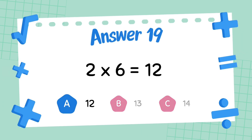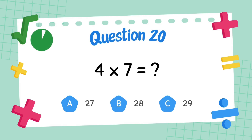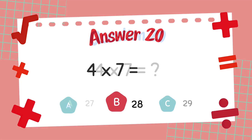The answer is 12. What is 4 multiply 7? The answer is 28.